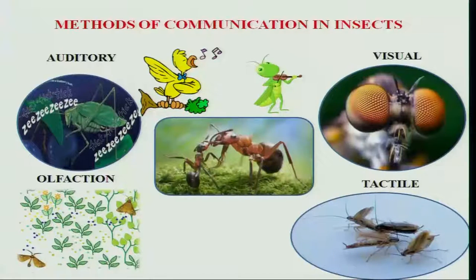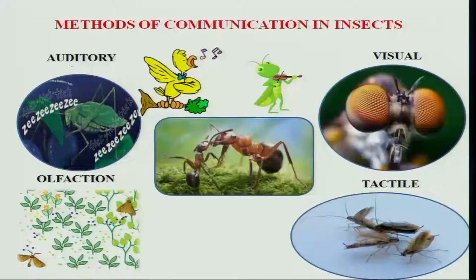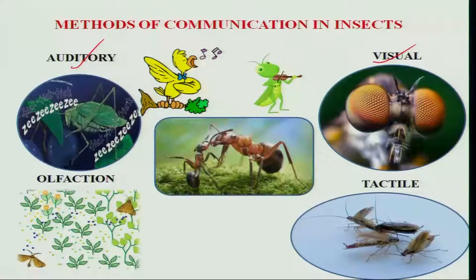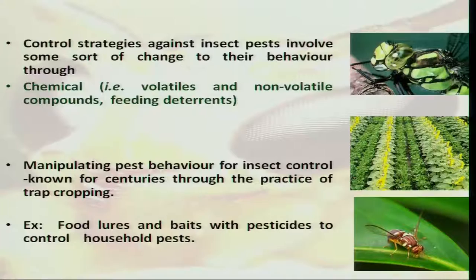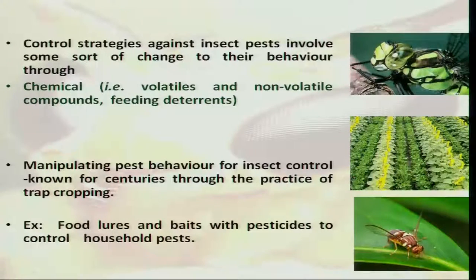On this earth, each and every organism has developed its own communication system. In vertebrates, the communication system is through auditory and visual. But in the case of insects, apart from auditory and visual, another system of communication is through olfaction and also tactile. In insects, the communication system through olfaction is strong, and this olfactory behavior of insects can be well established and used in pest management programs.